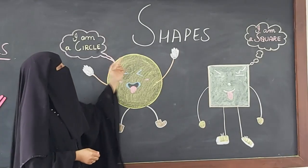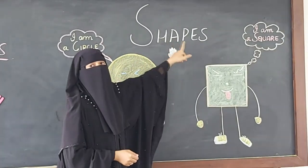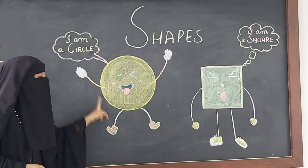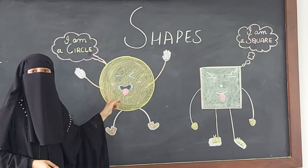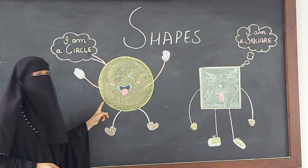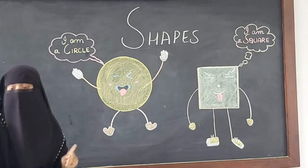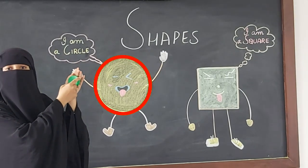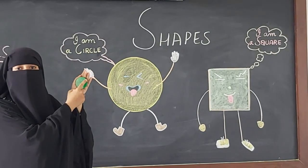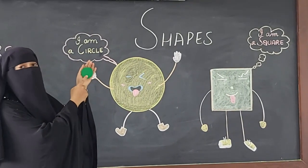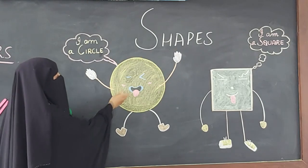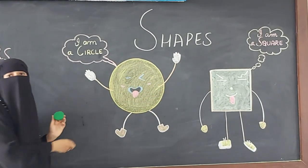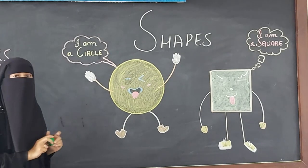Children, let me introduce you to shapes. Our first shape here — circle. Which shape is this? Circle. I have a circle, round in shape. There is no corner. This makes a circle. This shape is round in shape. Make a circle.